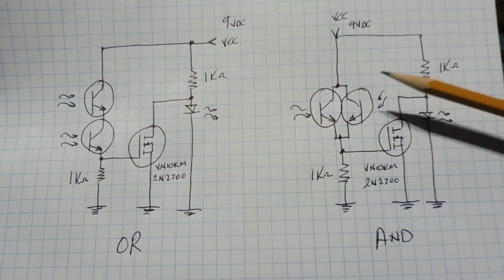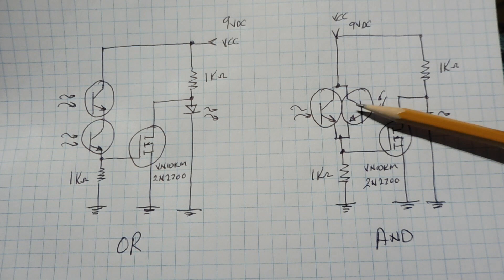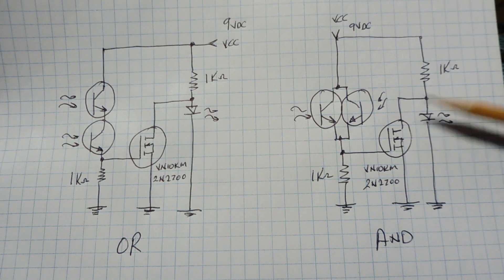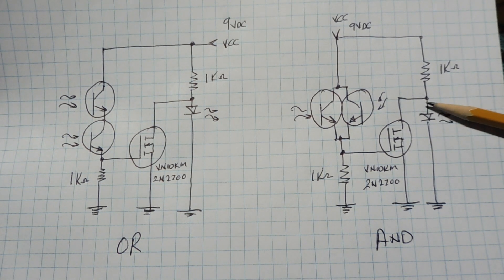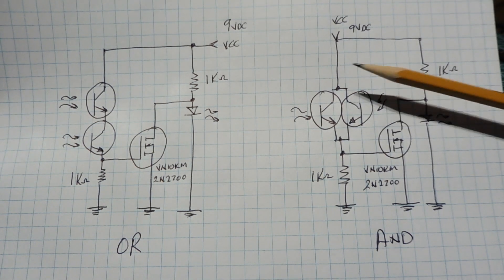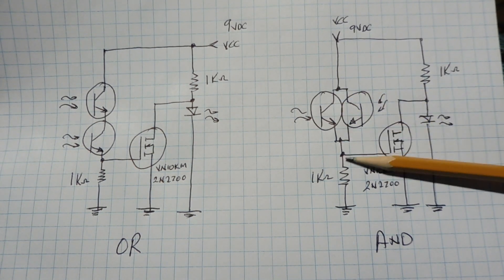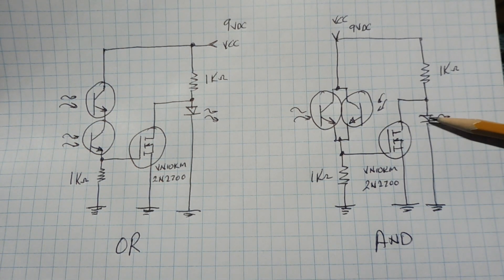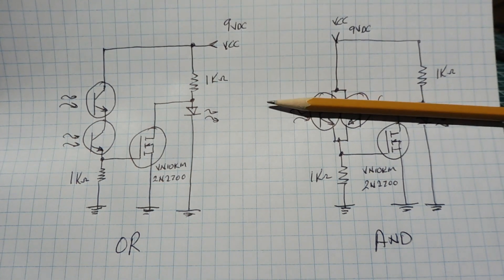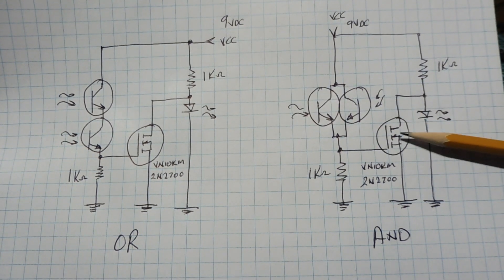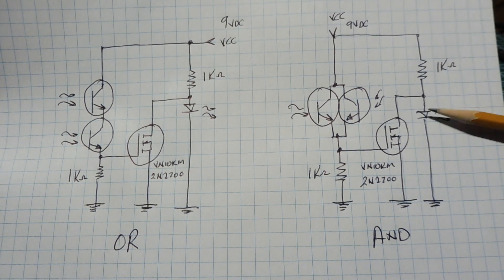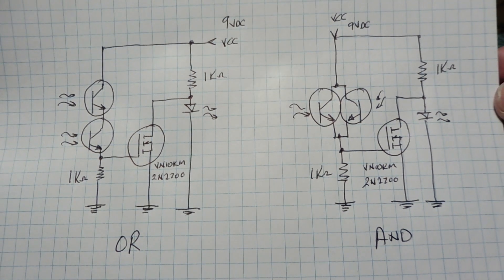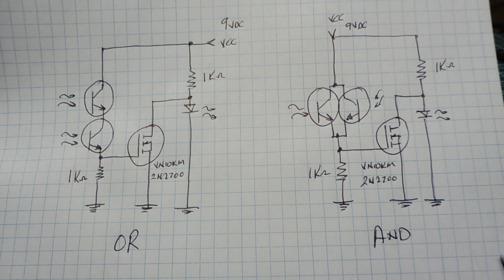On the AND function circuit we have two phototransistors in parallel. When light is hitting both of them they're both on, so we're getting a voltage on the gate of the MOSFET which takes away current from the LED so the LED is off. If we block one of them we still get voltage through the other one to the gate, which keeps the MOSFET on and the LED off. But if we block both of them we lose our gate voltage, the MOSFET turns off, and the LED turns on. That's our AND function — two simple circuits for OR and AND functions using phototransistors.